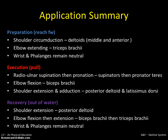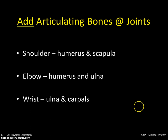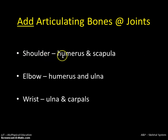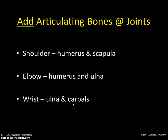That was the big overview and summary of all three phases. You might also need to add the bones that articulate at those joints. The shoulder involves the humerus and the scapula articulating, the elbow is the humerus and the ulna articulating, and the wrist is the ulna and the carpals articulating.